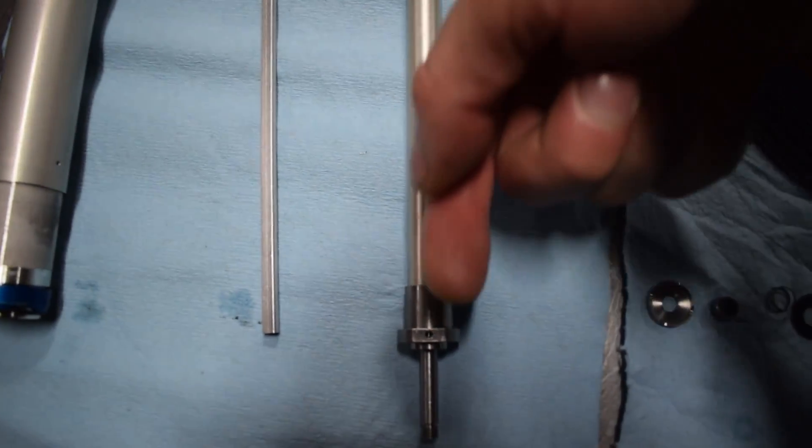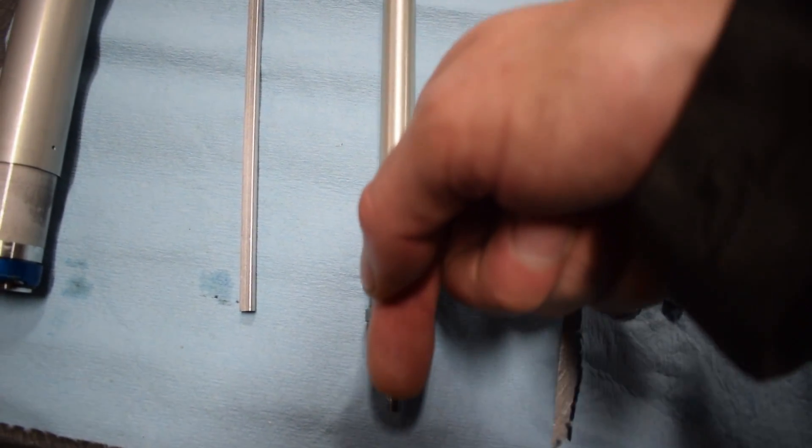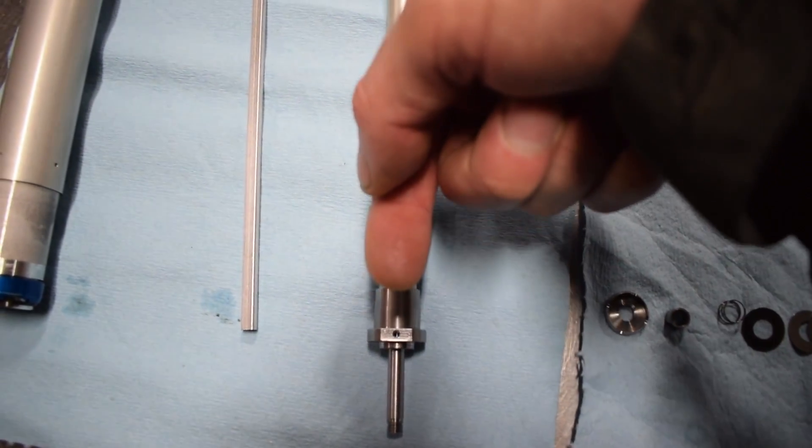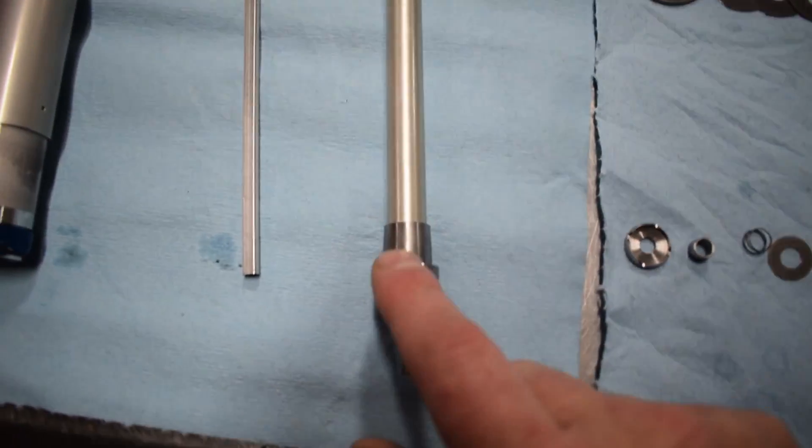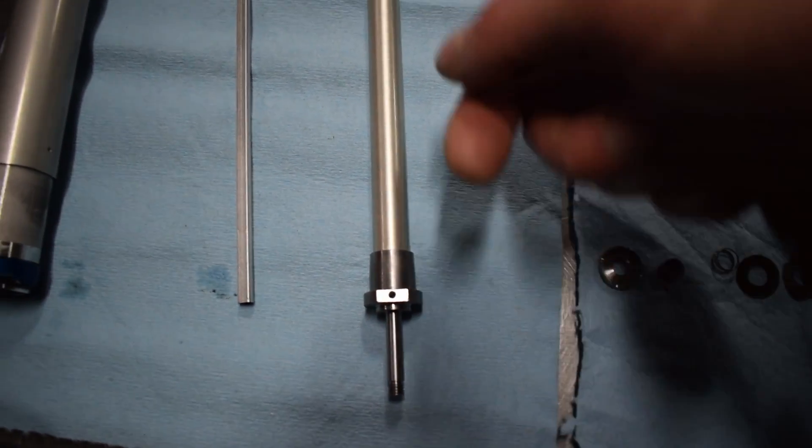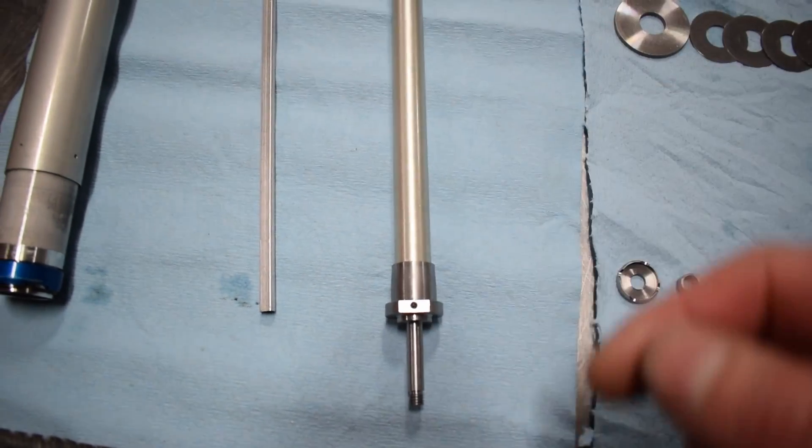That rod then turns a needle that goes inside of right here. It's a tapered needle. It sticks up like this. And when you turn the adjuster in, the needle goes this way. When you turn the adjuster out, the needle goes that way. See this little hole right here?